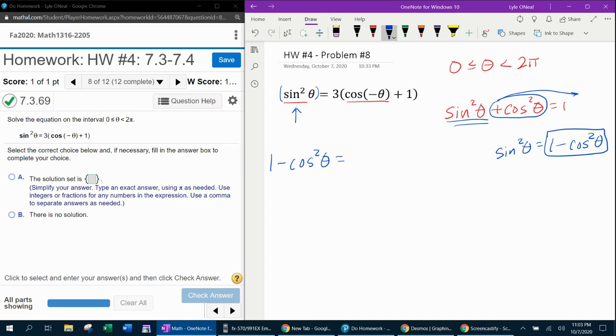The other issue I need to deal with is the negative angle here. I need to make that positive if possible. And so I'm going to be using the even-odd property for cosine. And that property says cosine of negative theta is the same as cosine of theta.